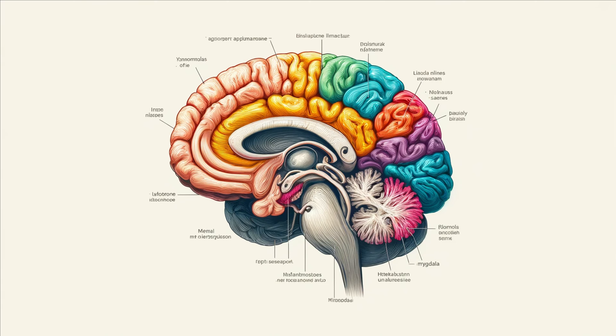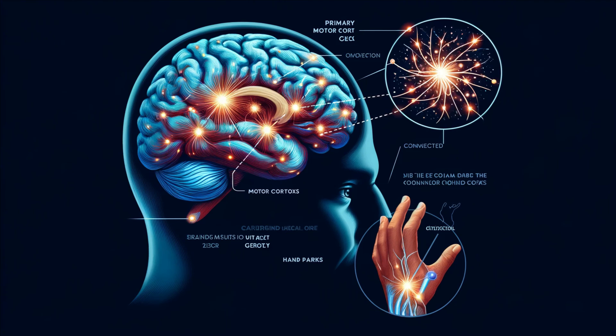The limbic system, often referred to as the emotional brain, includes structures like the hippocampus, amygdala, and parts of the thalamus. This system is crucial for regulating emotions, forming memories, and processing smells. The hippocampus helps you form new memories, while the amygdala is involved in emotional learning, especially fear-related memories.